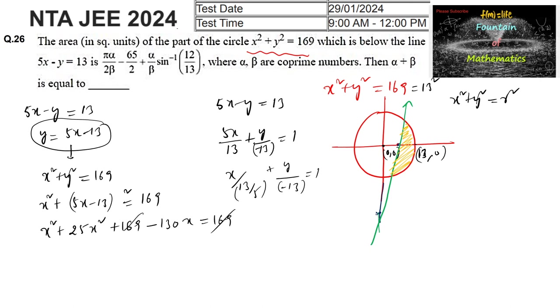Expanding, we get x² + 25x² - 130x = 0, that is 26x² - 130x = 0.